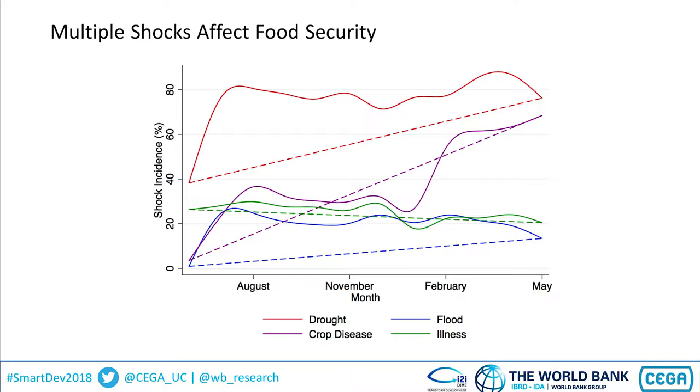The big red line is drought, which most of the households are being affected by. The purple line is fall armyworm, which you can see is very much affected by seasonality — as soon as the harvest kicks in, that's when fall armyworm really becomes a problem for these households.